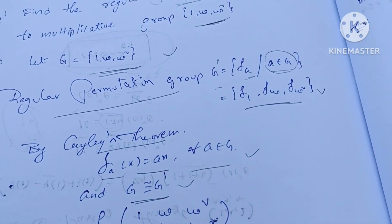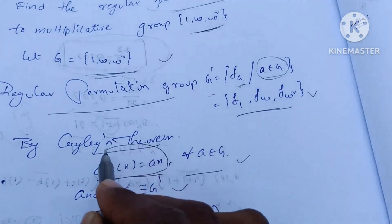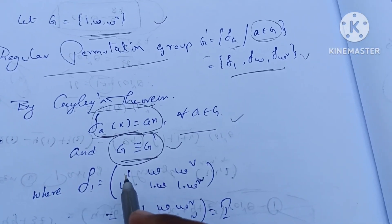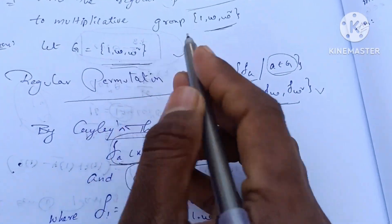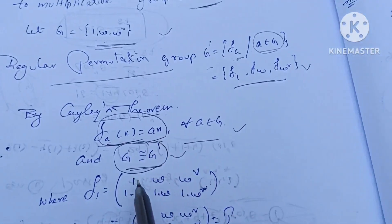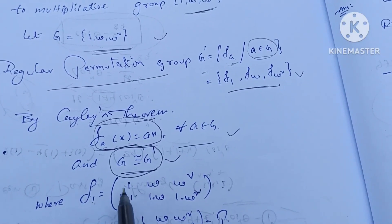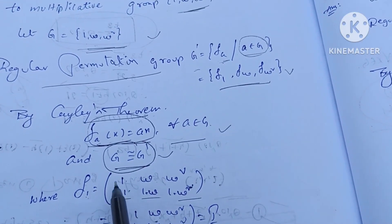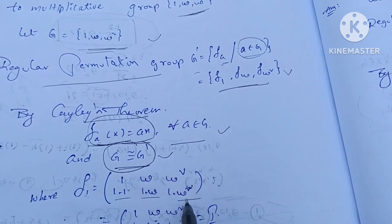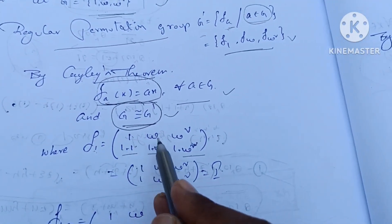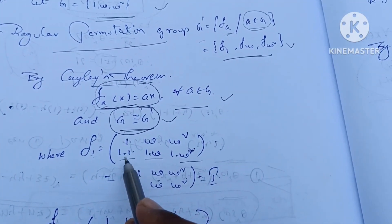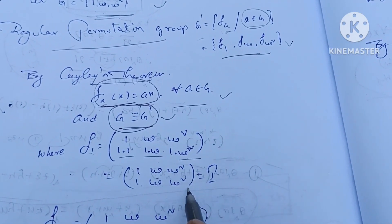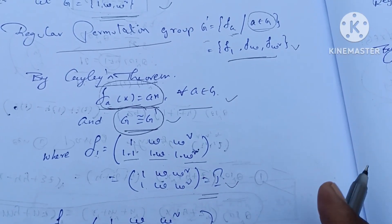We can discuss that. I write the conditions. Where f_1 is equal to — the elements are 1, omega, omega square. Every time I write 1, omega, omega square. So 1 into 1, 1 into omega, 1 into omega square. These values are: 1 into 1 gives 1, 1 into omega gives omega, 1 into omega square gives omega square. These values are equal to the identity permutation.